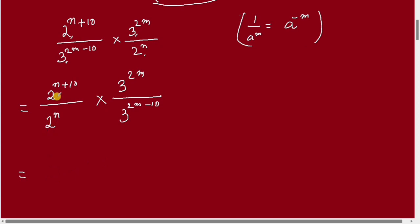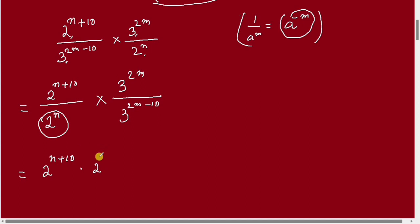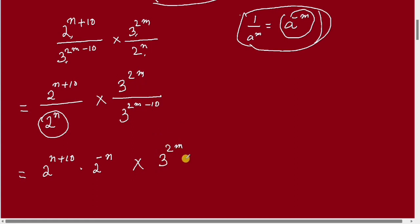So my best friend is 2 to the power 2m into — so my best friend is 2 to the power minus n. Okay. So my best friend is 3 to the power minus n. Okay, no problem.